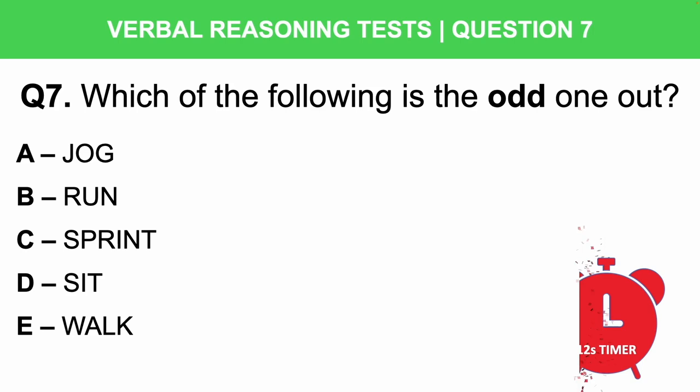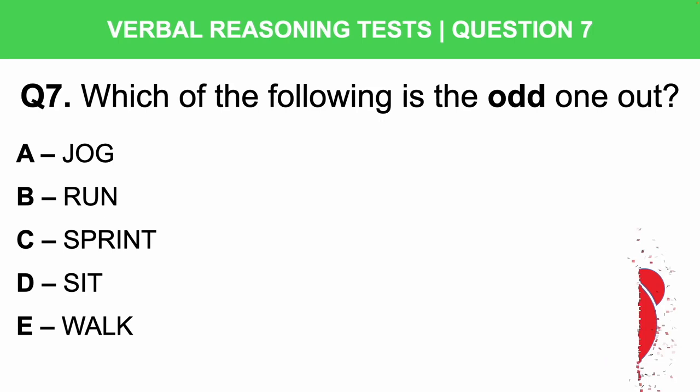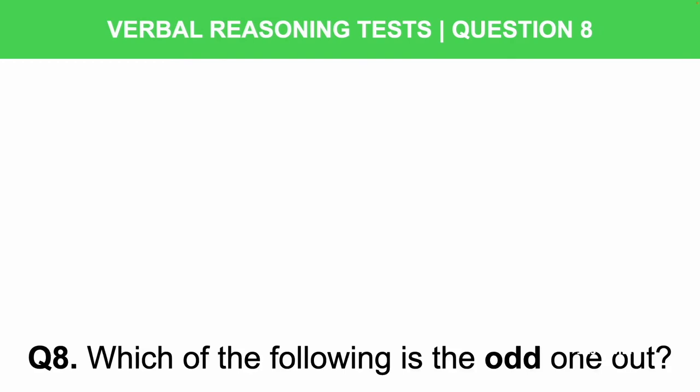Question 8: Which of the following is the odd one out? Is it A: Cat, B: Dog, C: Owl, D: Horse, or E: Elephant? 12 seconds starting now.